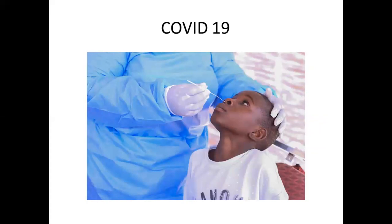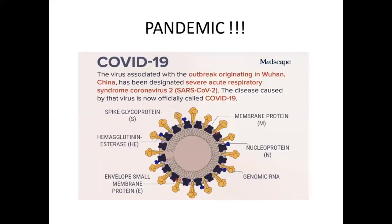Moving on to COVID-19 pneumonia: COVID-19 has caused a pandemic. The virus associated with the outbreak originated in Wuhan, China, and has been designated as severe acute respiratory syndrome coronavirus 2, or SARS-CoV-2. The disease caused by that virus is officially called COVID-19. The structure of the COVID-19 virus consists of the membrane protein, nucleoprotein, genomic RNA, spike glycoprotein, and enveloped small membrane protein.